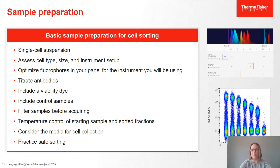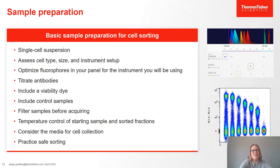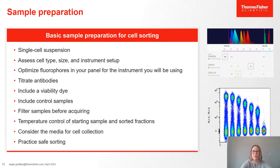Always include controls — for any experiment, you need controls. This can include single color controls to ensure your staining and prep went properly, negative controls to look at background autofluorescence, and fluorescence minus one controls if you have concerns about overlapping populations. All of these are critical to ensuring the quality of your experiment. Also consider temperature control — keep the cells happy through the sorting process. Many instruments have temperature control on both the sample input and sort output sides. Keeping cells at a steady temperature throughout sorting will really help with overall viability and recovery.